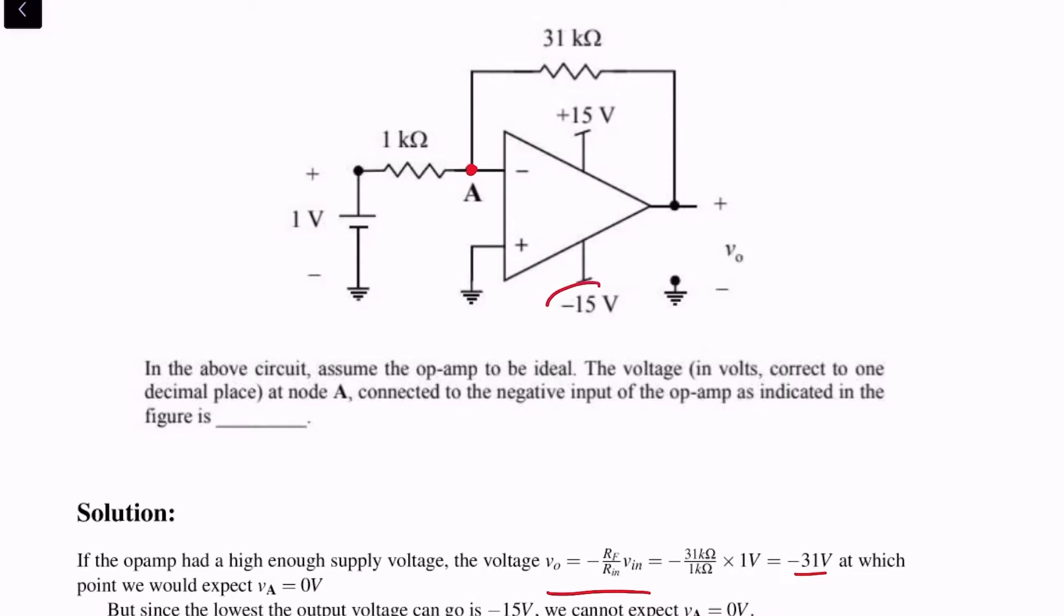Which is not possible because the output voltage can at the very least be minus 15 volts only. So we cannot expect that Va is 0.